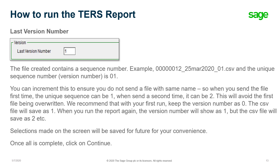The last version number: the file created contains a sequence number and ends in an underscore 01.csv, where the unique sequence number or version number is 01. You can increment this to ensure you do not send a file with the same name. When you send the file for the first time, the unique sequence can be 01; when the second one is sent, it can be 02 — this will avoid the first file being overwritten. We recommend that with your first submission you keep the version number as 0, so the CSV file will save as 01. When you run the report again, the version number will show as 01 but the CSV file will save as 02. The selections made on the screen will be saved for future convenience, so all selections will be exactly the same when you run the report again, and you can make relevant changes as needed.